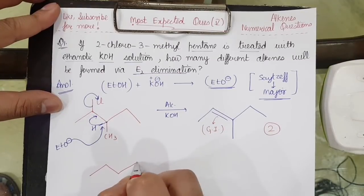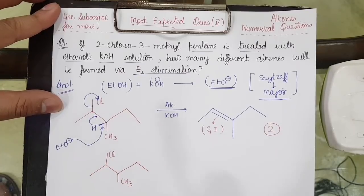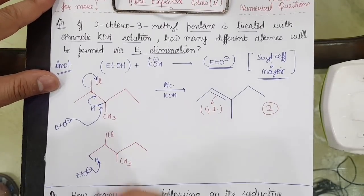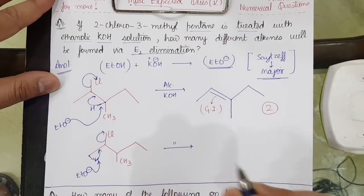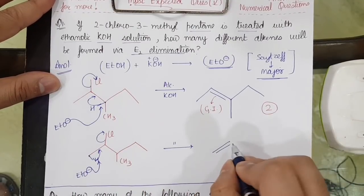The ETO minus can also react from the other side. When it comes from the other side, the hydrogen is here. ETO minus came, attacks this hydrogen which is the most acidic hydrogen for this part. This goes here, takes out the Cl from here, giving me the formation of the double bond here.